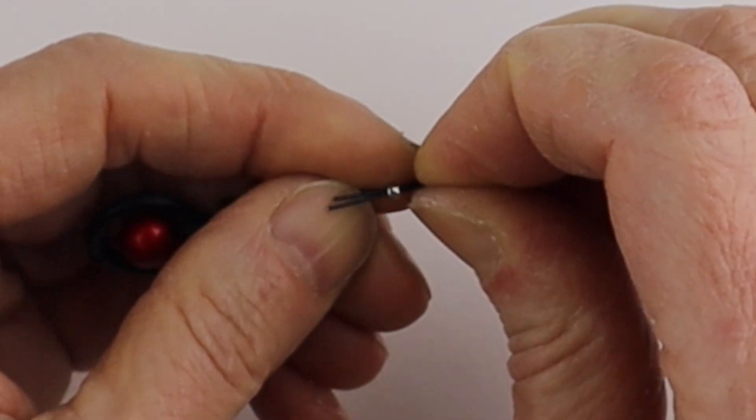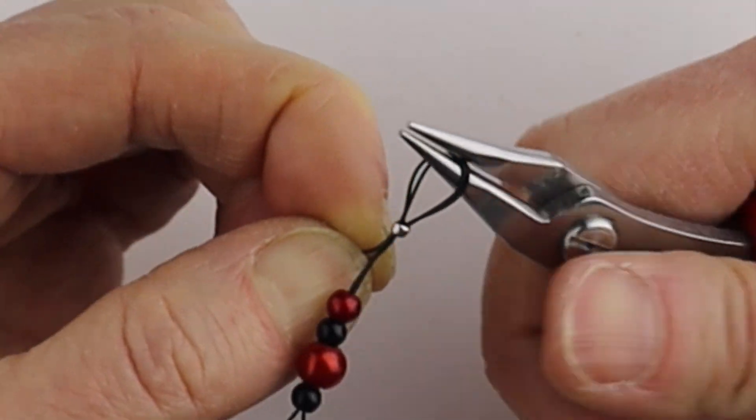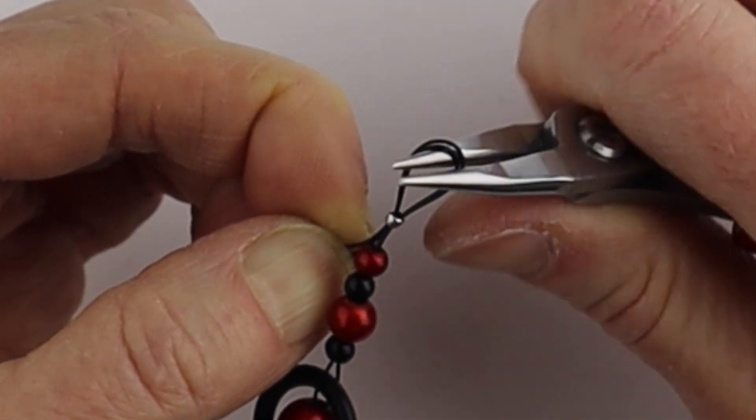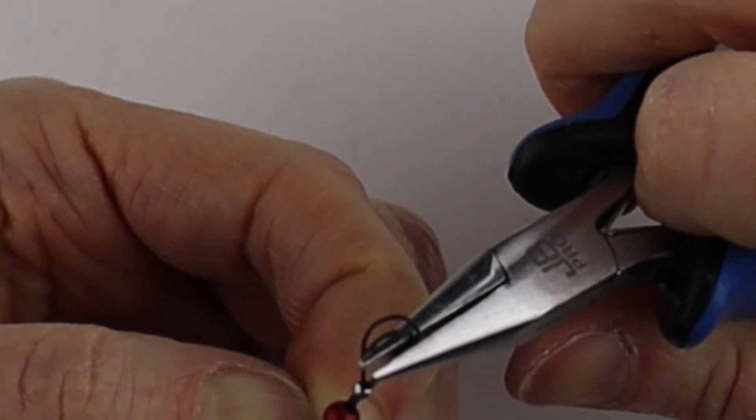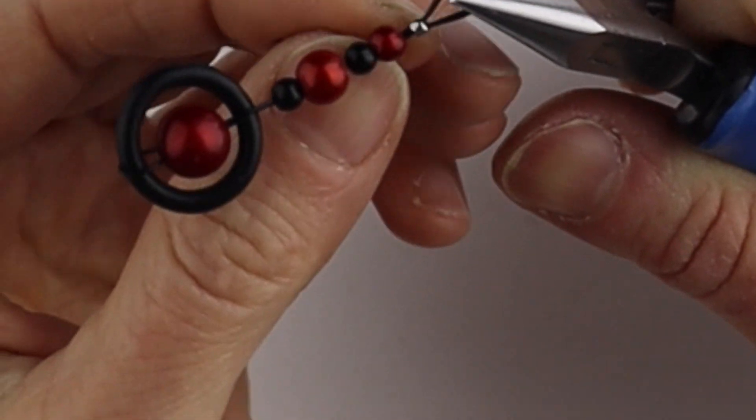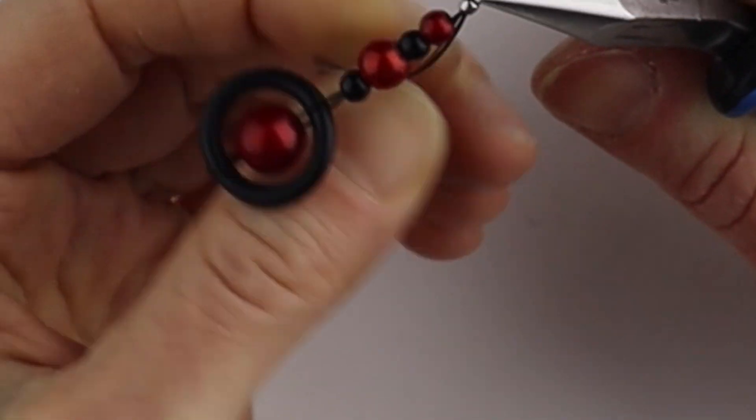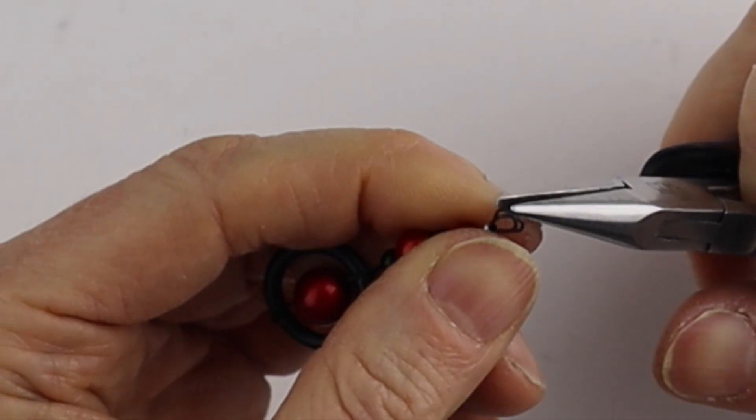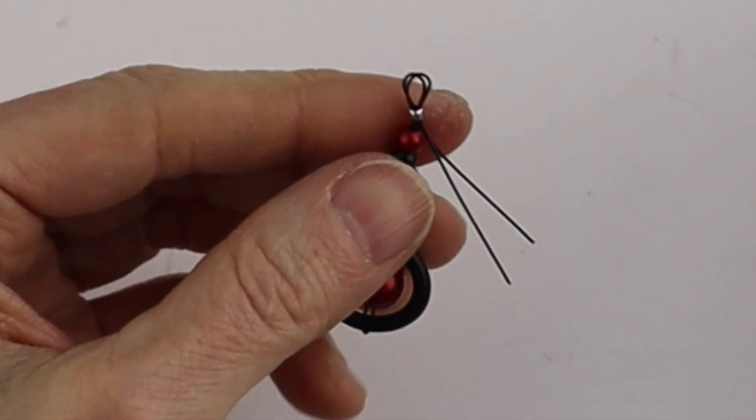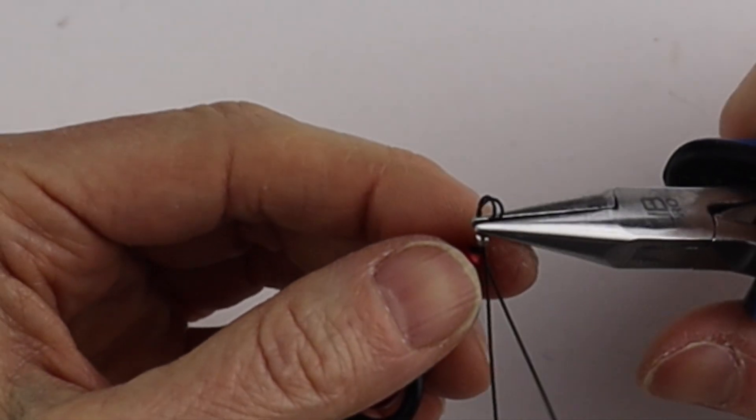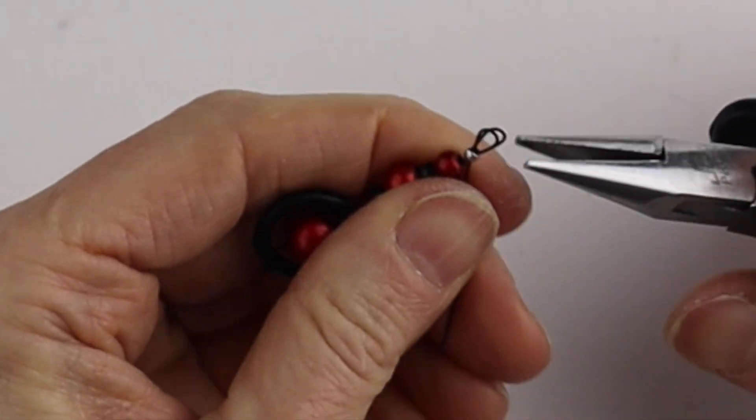If it's easier, do this with the pliers. Sometimes it's better to hold them with flat pliers and push it down around. Pull this down a little, making sure these stay about the same size, then compare again. Pull it down a little more.